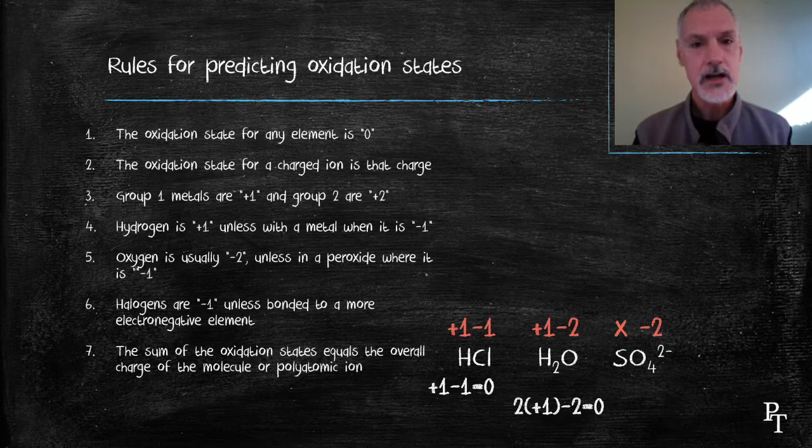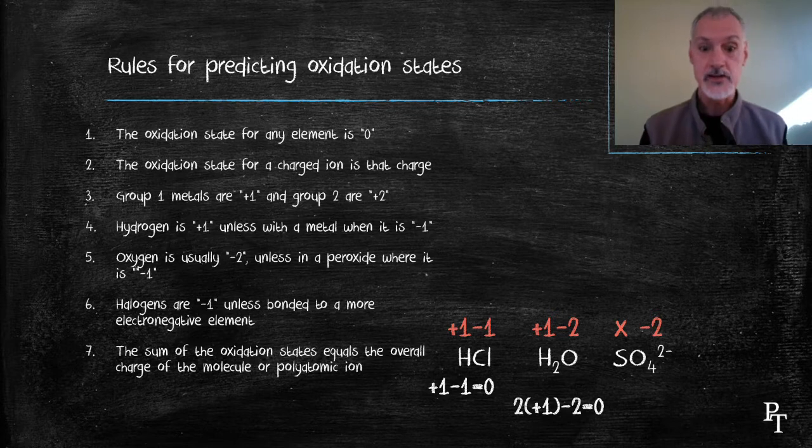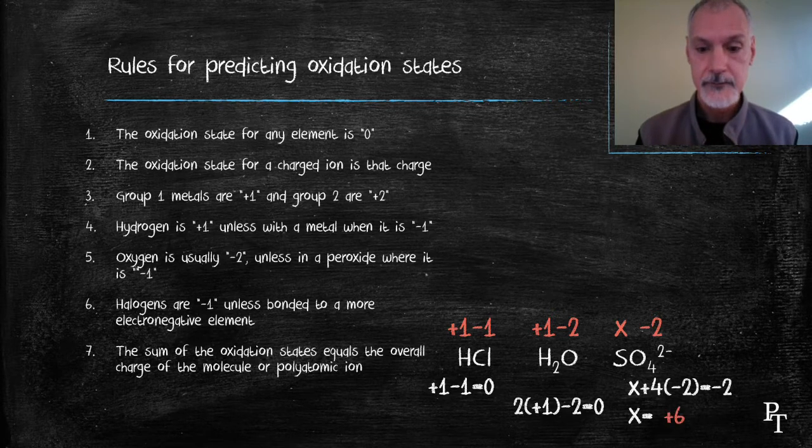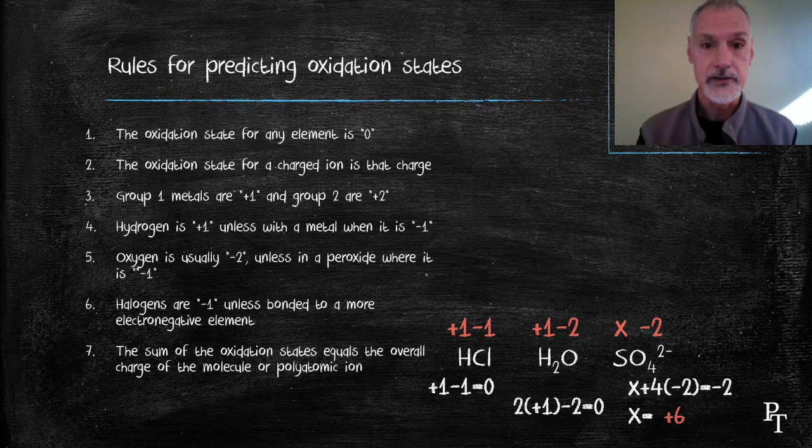In my final example, I don't know what the charge is for sulfur. It's not listed in my seven rules. So I let it be x, and then I set up an algebraic expression to solve for that x. Here, I come up with sulfur's charge or oxidation state being plus six in this example.